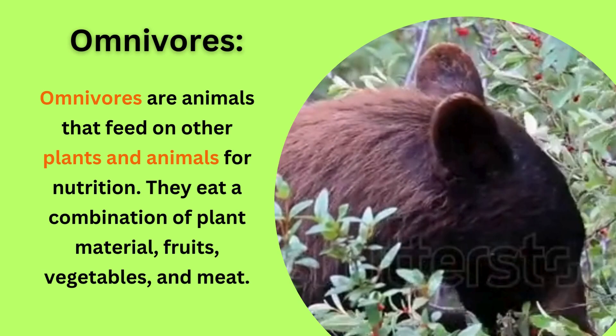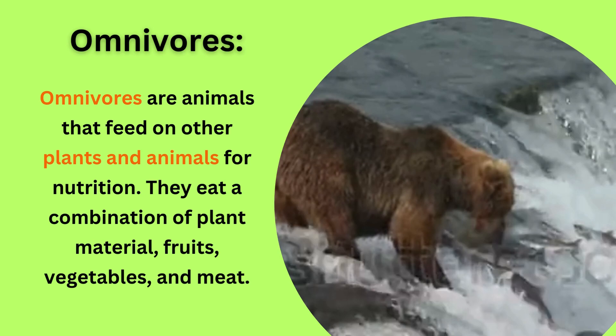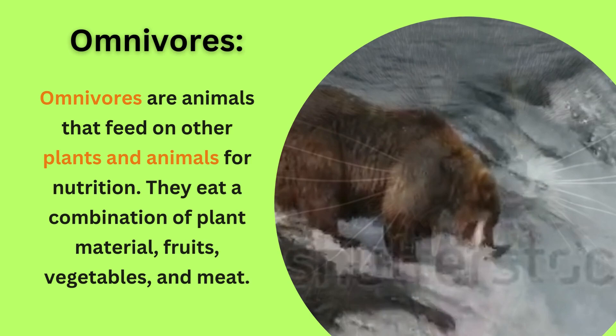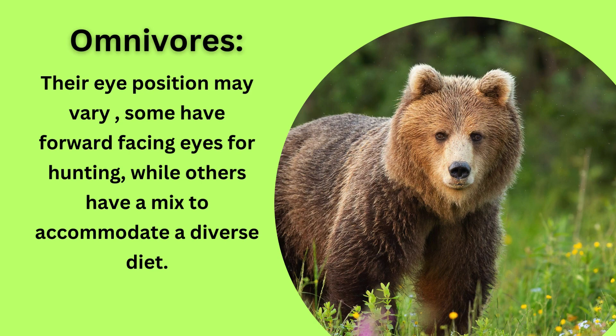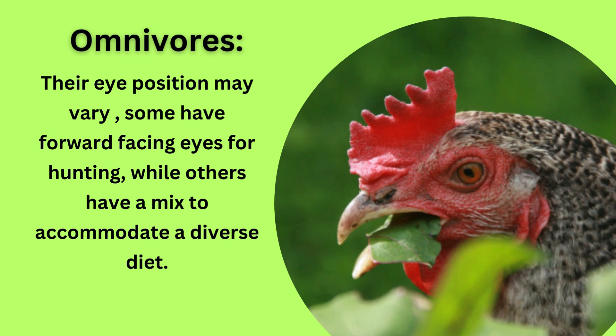Omnivores are animals that feed on both plants and animals for nutrition. They eat a combination of plant material, fruits, vegetables, and meat. They have a combination of sharp front teeth and molars for grinding. Their eye position may vary — some have forward-facing eyes for hunting, while others have a mix to accommodate a diverse diet.